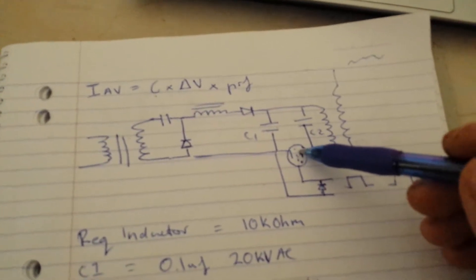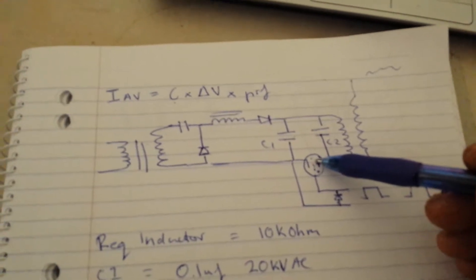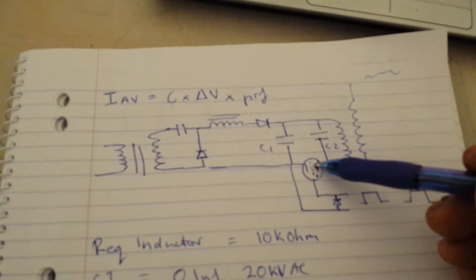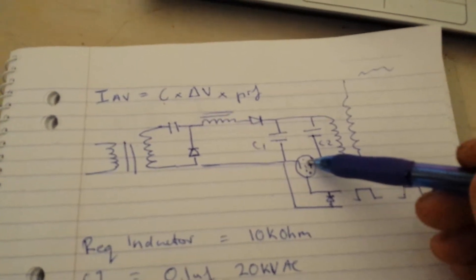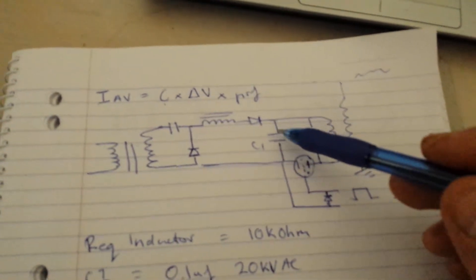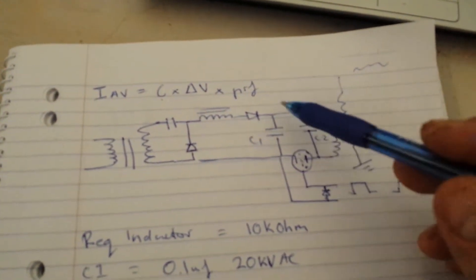They work on Townsend discharge or something like that, avalanche discharge. They're a negative resistor, which means the more current they conduct, the lower the resistance. So they're impossible to turn off when they turn on unless you remove the input voltage or reverse the voltage.